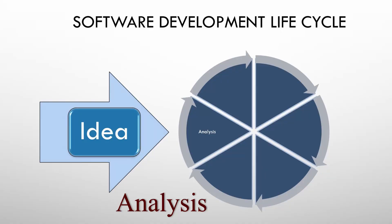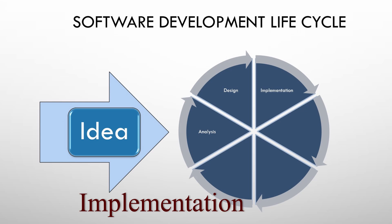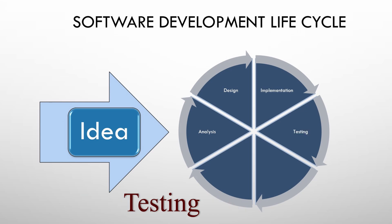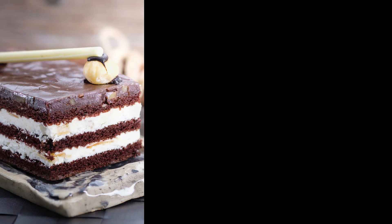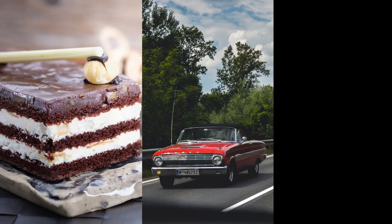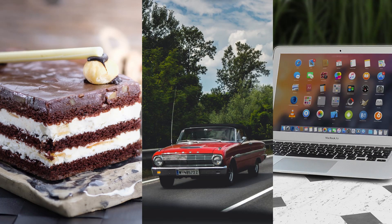The SDLC is broken out into six different phases. The first is the analysis phase, phase two is design, phase three is implementation, phase four is testing, then deployment, and then maintenance. To make it easy to understand each phase, we're going to use a comparison between making a cake in a bakery, making a car, and also a software application.